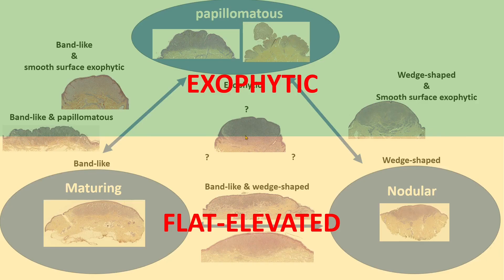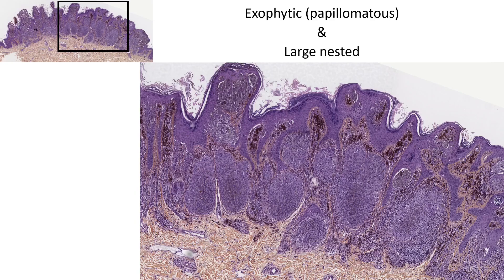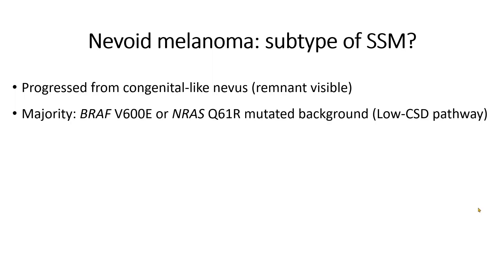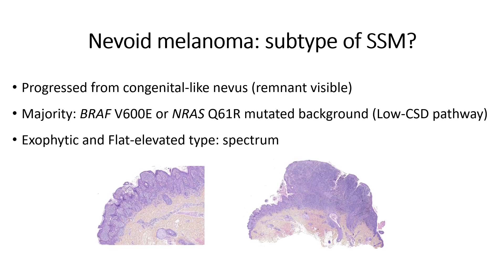When trying to classify cases between these three architectures, we often found overlapping features between two subtypes or even sometimes combining all three. To simplify, we decided to separate lesions between exophytic architecture and what we call flat elevated architecture. In our view, nevoid melanoma is a subtype of superficial spreading melanoma. You can sometimes see remnants of a congenital-like nevus in the background, and most have a BRAF or NRAS mutation. We can also have a spectrum going from SSM on one side to a nevoid melanoma next to it.